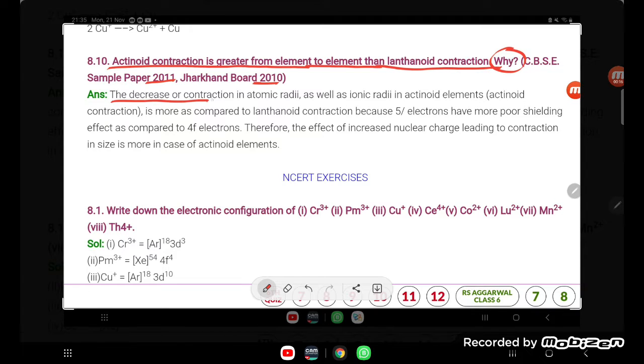The decrease or contraction in atomic radii as well as ionic radii in actinoid elements, that is actinoid contraction, is more as compared to lanthanoid contraction because 5F electrons have more poor shielding effect as compared to 4F electrons.